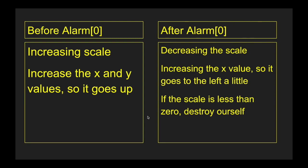This is how we're going to manipulate our text. We'll create an alarm set to a certain number in our create event. Before the alarm fires, we increase the scale so it gets bigger, and increase the y value so it goes up. After alarm 0 fires, we decrease the scale, and if the scale is less than zero we destroy the object. We also increase x so it drifts left slightly.